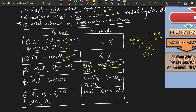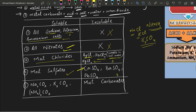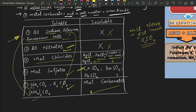Most sulfates are soluble in water, but three sulfates are insoluble: calcium sulfate, barium sulfate, and lead sulfate. Most carbonates are insoluble in water. However, because all sodium, potassium, and ammonium salts are soluble, sodium carbonate, potassium carbonate, and ammonium carbonate are all soluble. All other carbonates are insoluble in water.